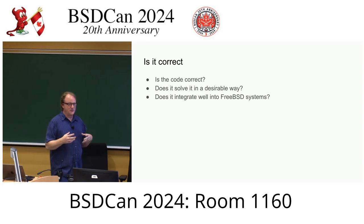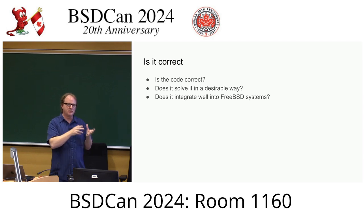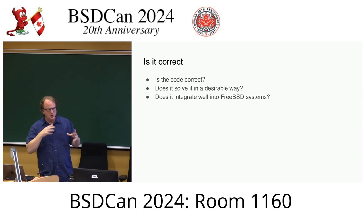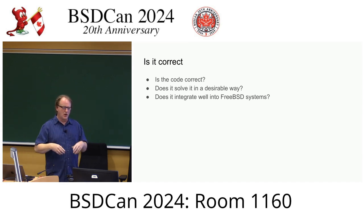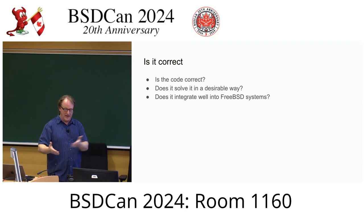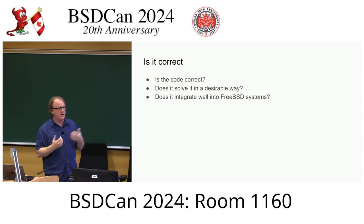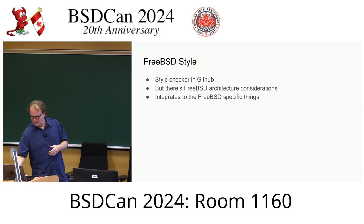Does it integrate well with the FreeBSD system? FreeBSD has a number of specialized things that changes should integrate with — if relevant, does it integrate with jails, with the rc.d init stuff? We'll provide feedback: you added this feature but didn't add the man page — that's part of the integration. We have man pages with the system. If you added a new flag to ls and didn't put it in the man page, we'll say to add it. If it's not documented, we try not to commit it.